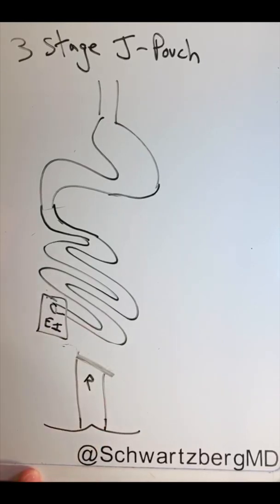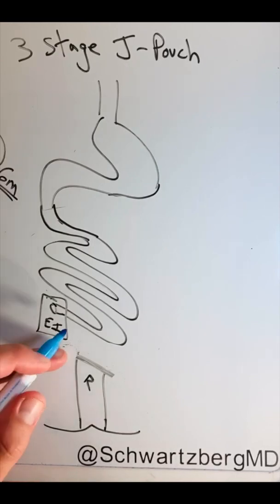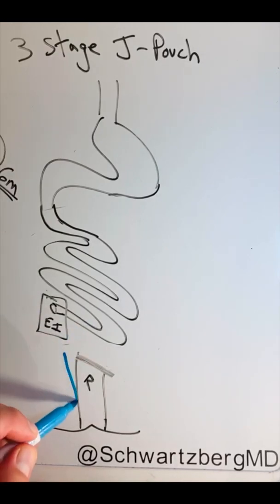Typically, the second stage, which is done typically six months later when the patient mentally and physically is doing well and is not on any medication, you perform a proctectomy, which is taking out the rectum.